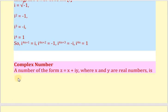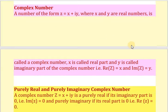Now let us see what a complex number is. A number of the form z equals x plus iy, where x and y are real numbers, is called a complex number. x is called the real part and y is called the imaginary part of the complex number. That is, Re(z) equals x and Im(z) equals y.